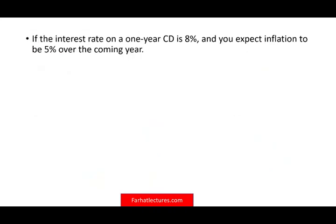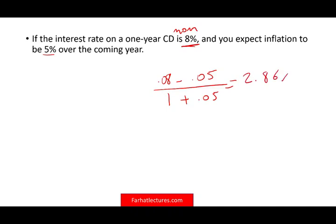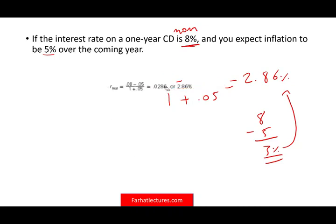Suppose the interest rate on a one-year CD is 8% — this is the nominal — and you expect inflation to be 5% in the coming year. How do you compute the real rate? Take the nominal rate 0.08 minus inflation 0.05, then divide by 1 plus inflation 1.05. Computing this formula gives 2.86%. On the exam, 8 minus 5 is 3%, so 2.86 is close to approximately 3%. If you have to approximate, at least know it's a little bit less than 3%.